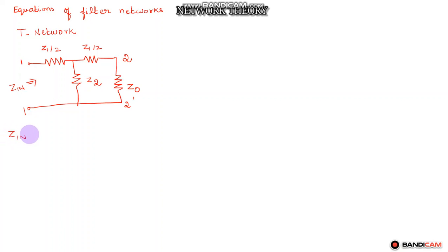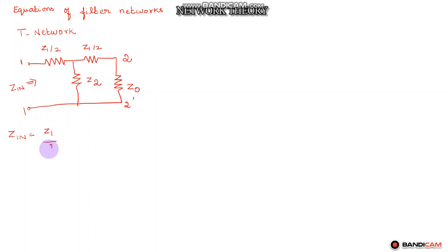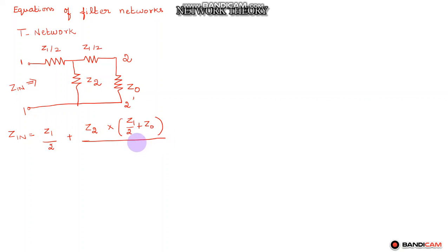From the input side, Zin is equal to — these two arms are in parallel and these two are in series, and again this combination is in series with Z1/2. So we can write this as Z1/2 plus the parallel combination: Z2 into (Z1/2 plus Z0) divided by (Z2 plus Z1/2 plus Z0).